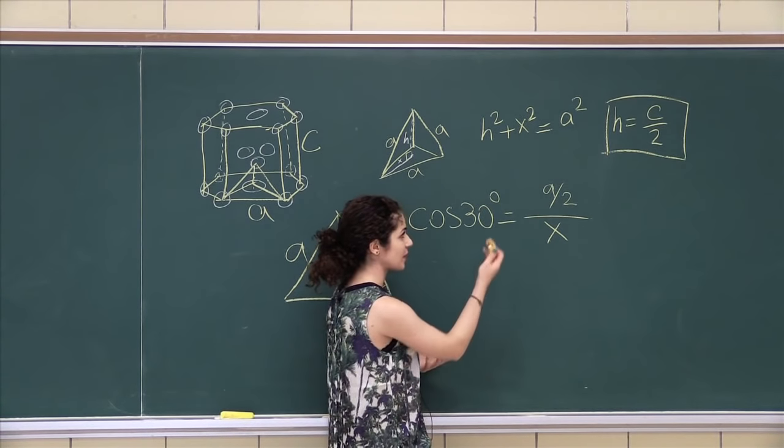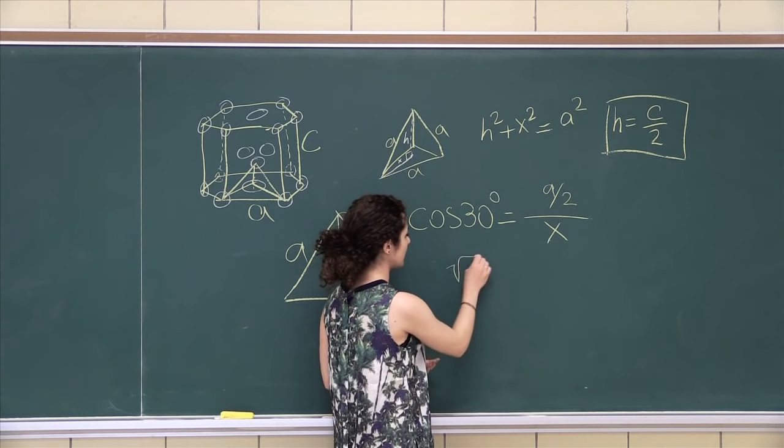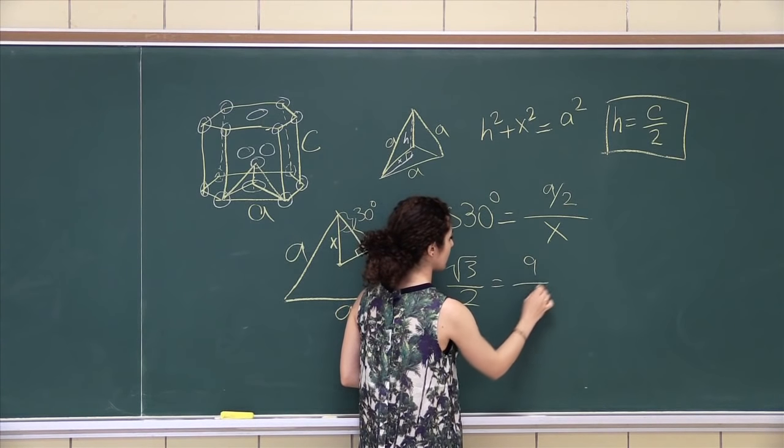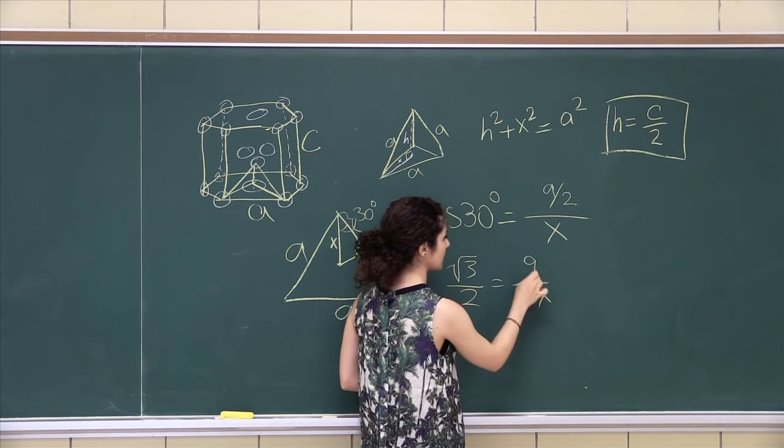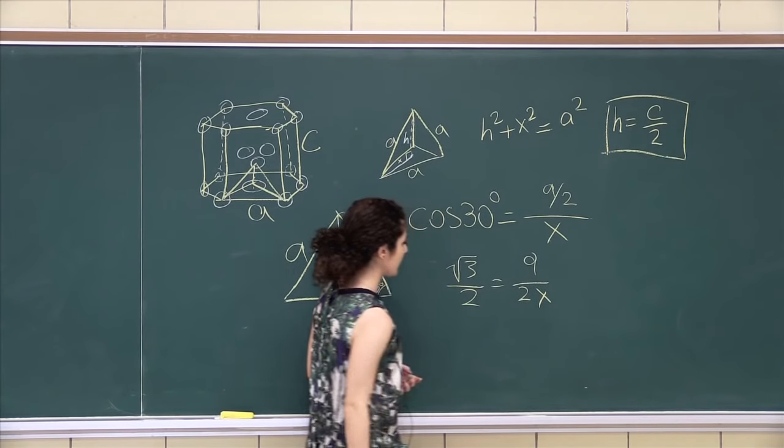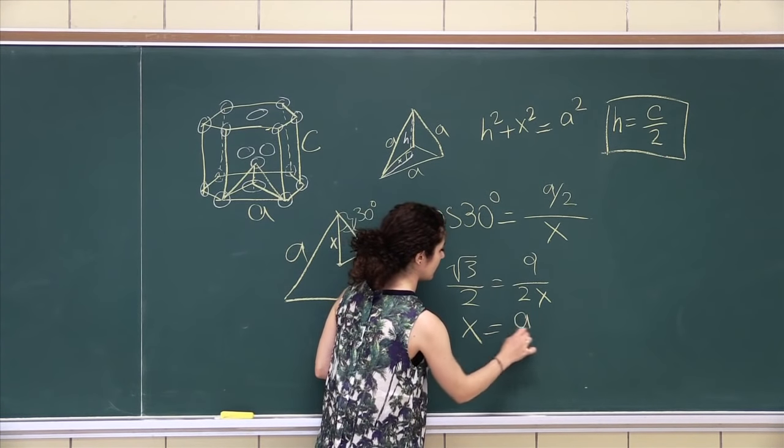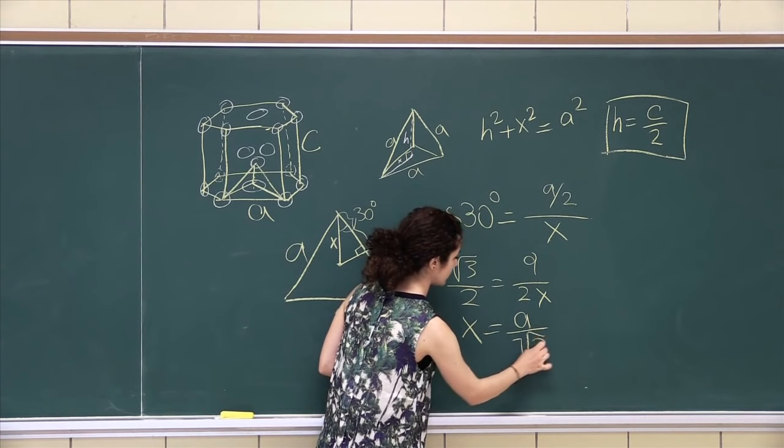If you just solve for X, so this is root 3 over 2 is equal to A over 2X, that's an A, A over 2X. So solve for X, and you get A over root 3. So now we have X.